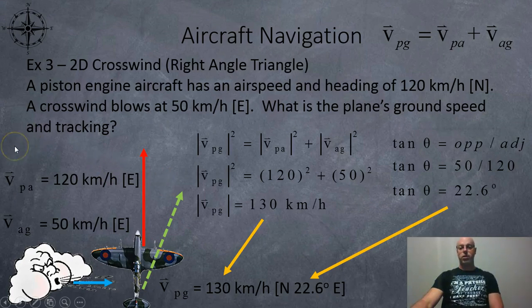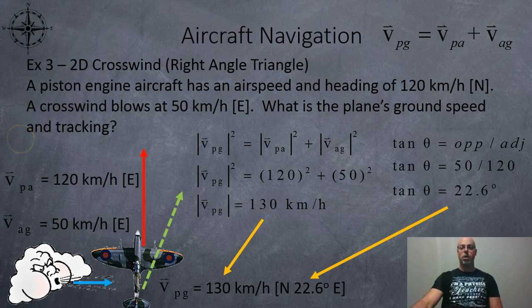Now we're going to do some two-dimensional examples. So here's a nice right-angle triangle, two-dimensional right-angle triangle. So here we've got like a World War II fighter plane, a piston engine plane, and it's flying north at 120 kilometers per hour. The wind is blowing to the east at 50 kilometers per hour. So this plane, every time it moves north, it's also going to move to the east.